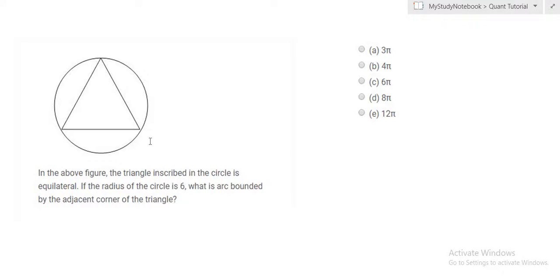Welcome to my study notebook. We are here talking about another geometric problem. In this question, the triangle inscribed in the circle is equilateral, which means all of the sides are equal.